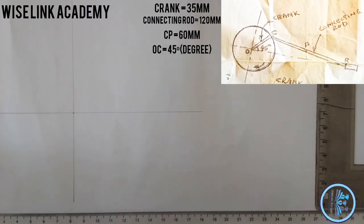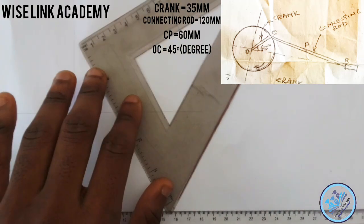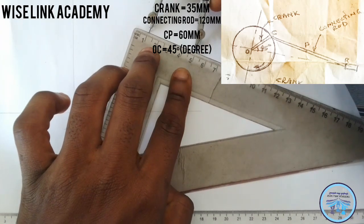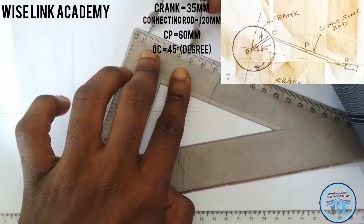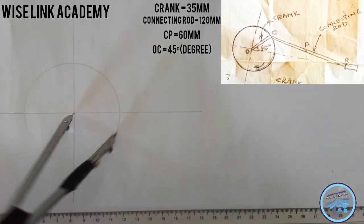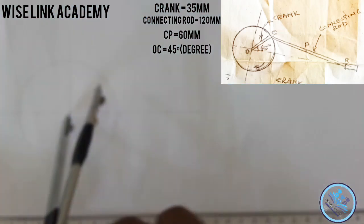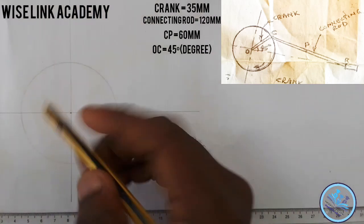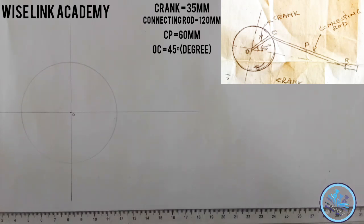My advice to everybody is that if you want to start drawing a link mechanism, you start with drawing of your crank. It helps a lot. My crank is going to be 35mm. From this point to this point is my 35mm. I will take it to my center point and draw the circle this way. This is my point O.